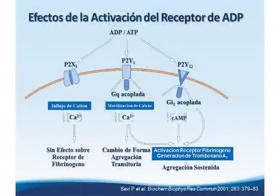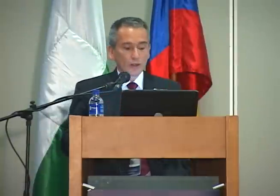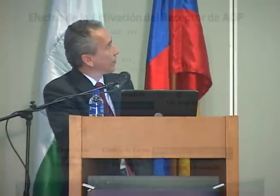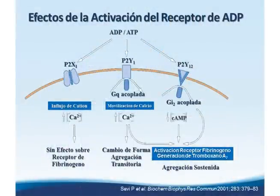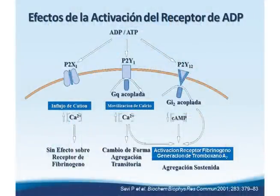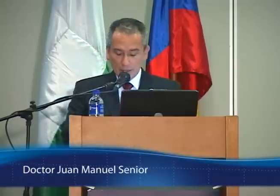En cuanto al receptor de ADP, tenemos tres receptores: el P2Y12, el más conocido; el P2Y1, y el P2X1. Los dos últimos están relacionados con el aumento de calcio intracelular y el cambio conformacional de la plaqueta, pero su efecto sobre la agregación es transitorio. El P2Y12 tiene acoplada una proteína G, activa el receptor de fibrinógeno y genera tromboxano A2, logrando una agregación sostenida. Por eso los medicamentos se han dirigido a bloquear el P2Y12.